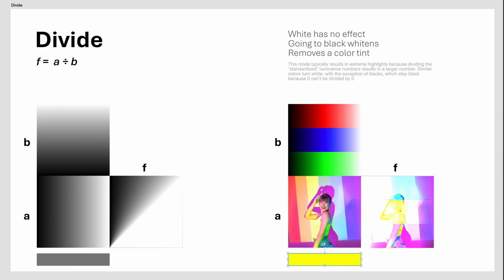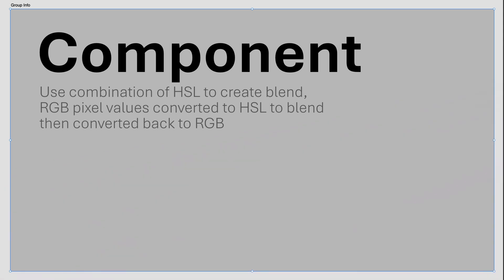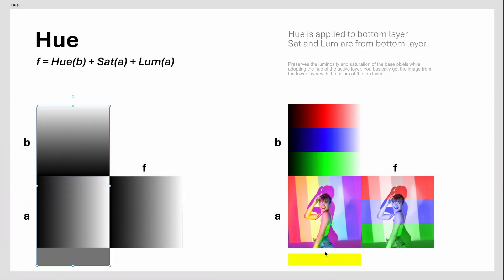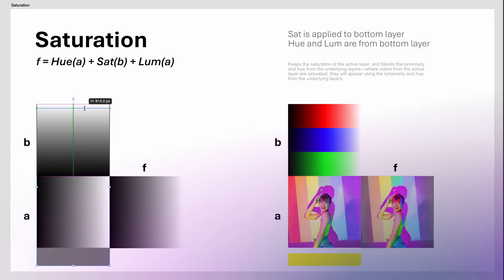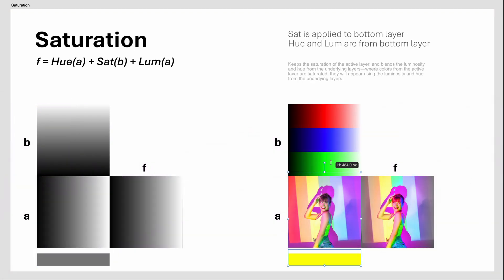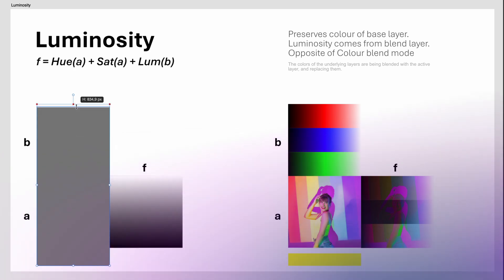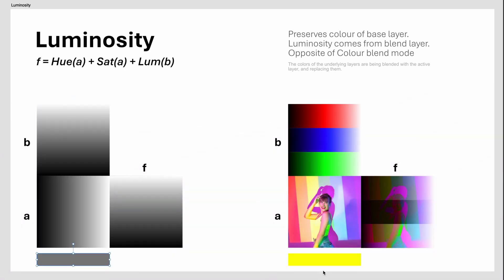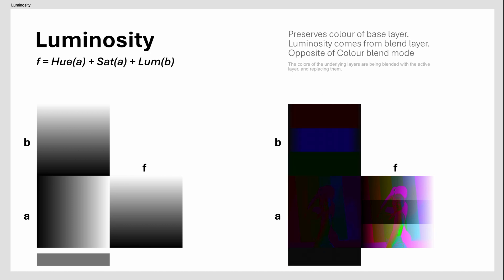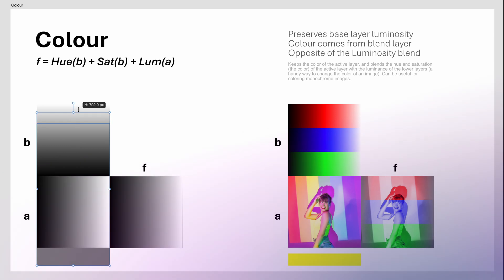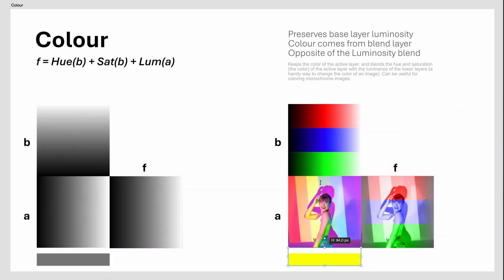The Divide Blend Mode is perfect for removing color casts. The Component Group. These blend modes convert the RGB color to HSL color and then calculate the blending. The Hue Blend Mode uses the hue of the active layer with the brightness and saturation of the underlying layers. The Luminosity Blend Mode uses the brightness or luminosity of the active layer with the hue and saturation of the underlying layers. The Color Blend Mode uses both the hue and saturation of the active layer with the brightness of the underlying layer.